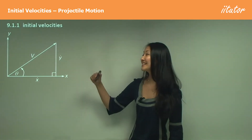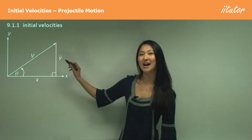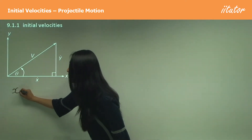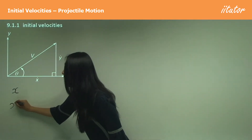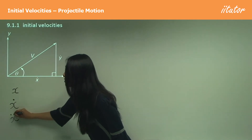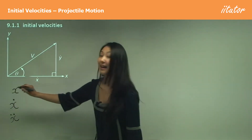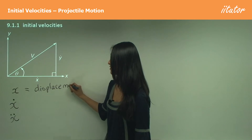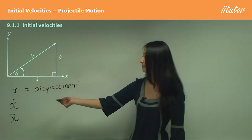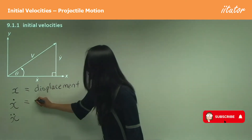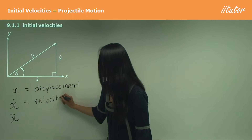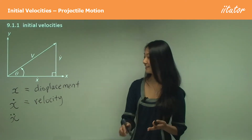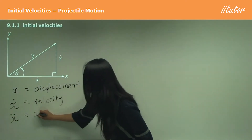Whenever you see a graph like this you'll see little symbols like x-dot and y-dot. Through all motion you'll see x, x-dot, and x with two dots on it. X just means displacement — how far an object has travelled. X-dot means velocity, which is like speed except velocity can be positive or negative. X with two dots is called acceleration.